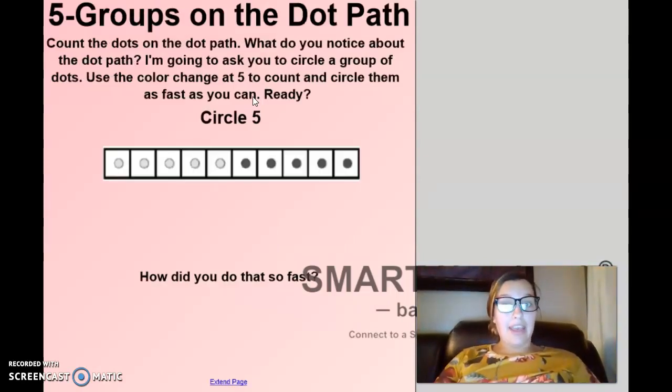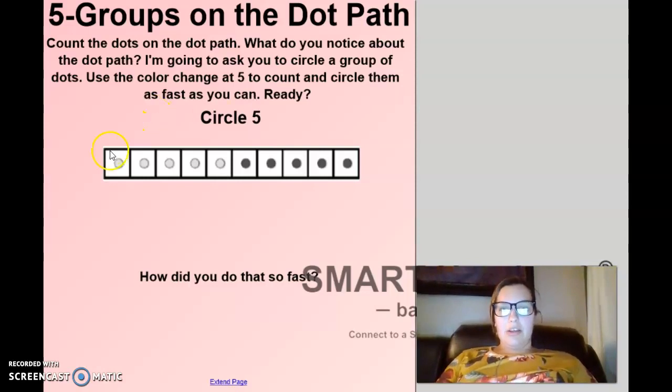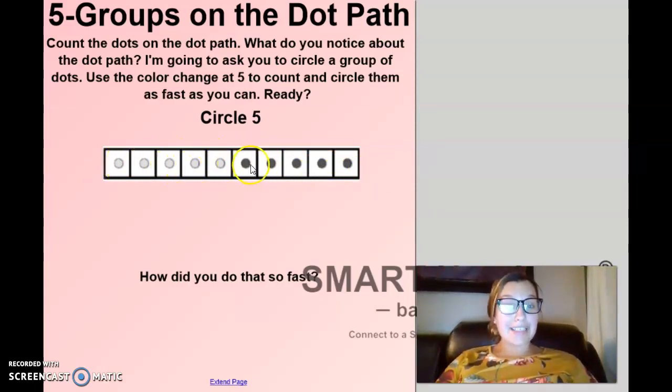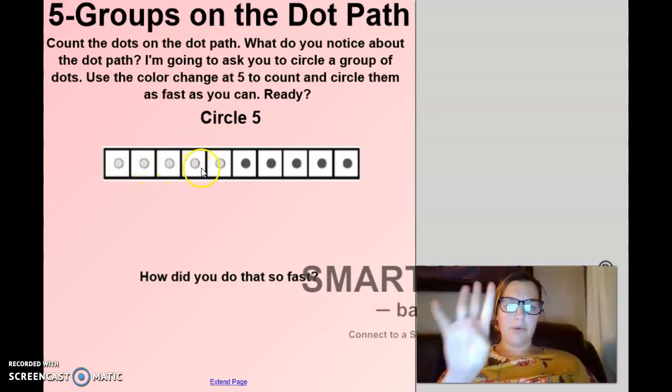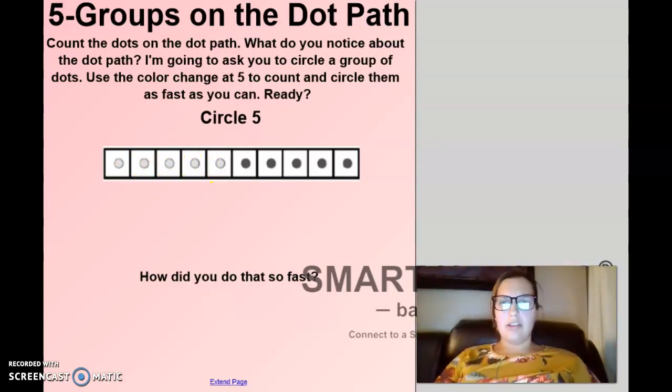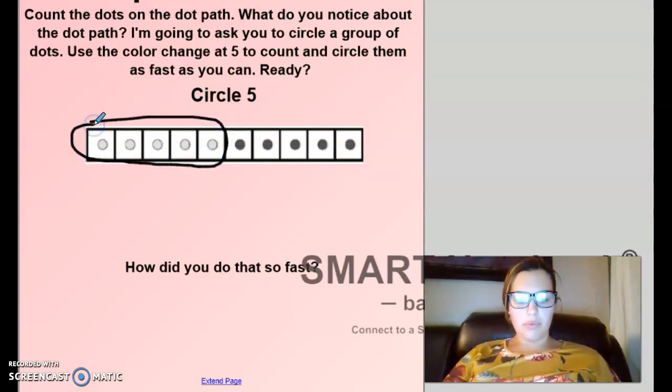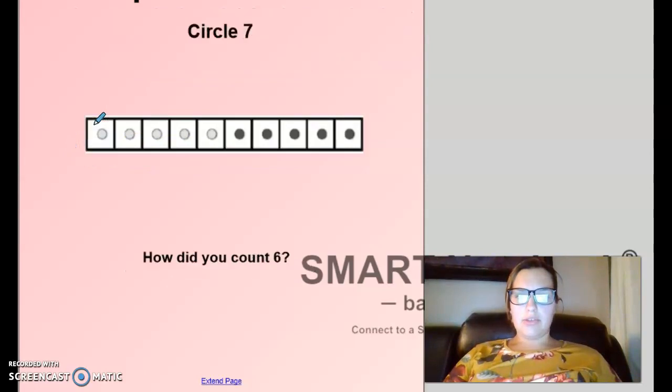Now we're going to use our dot path. And look at something changes here. Yes, the dots get darker. So how many light gray dots do we have? One, two, three, four, five. Let's circle five.